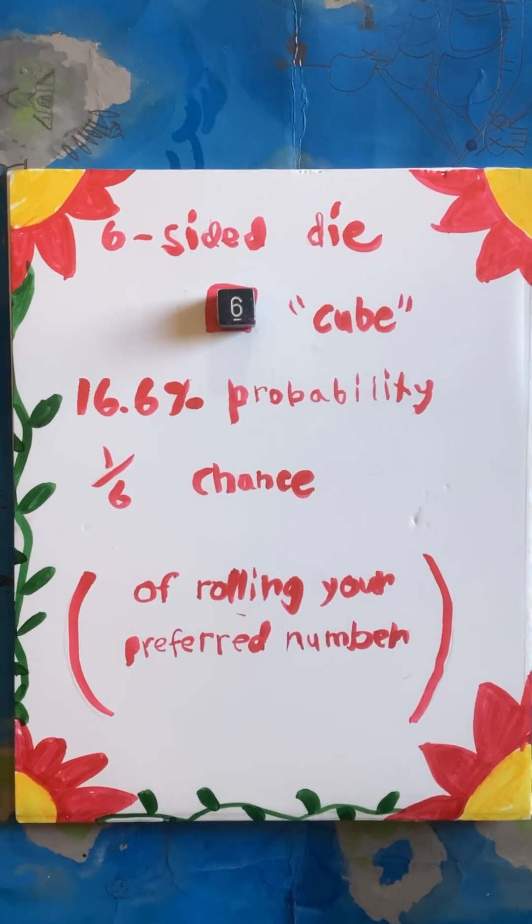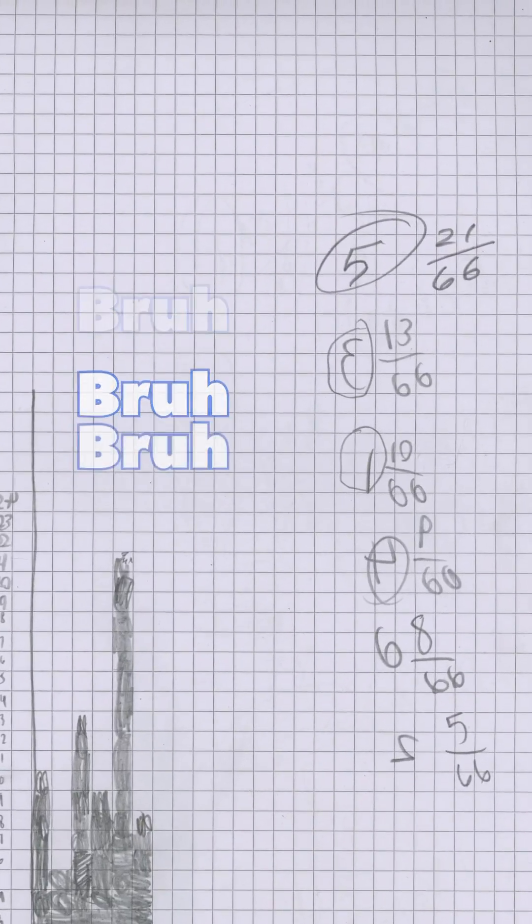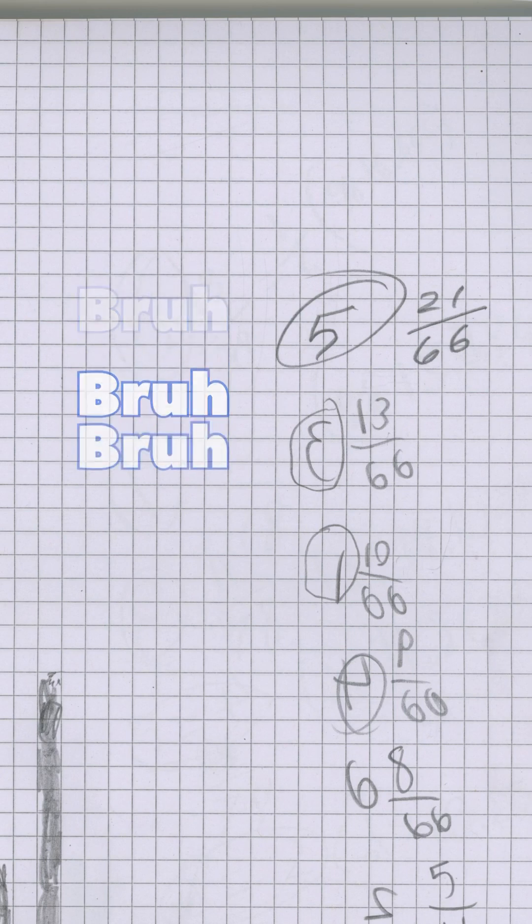The top roll for the D6 was the number 5, accounting for 21 of 66 rolls, also almost a third.